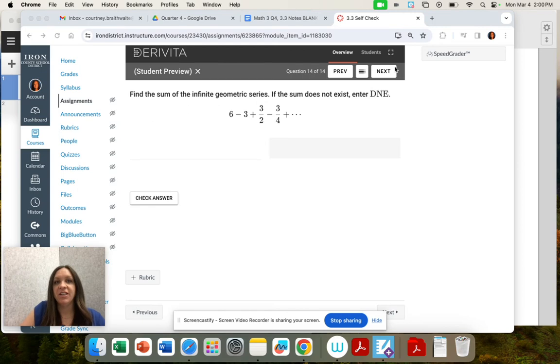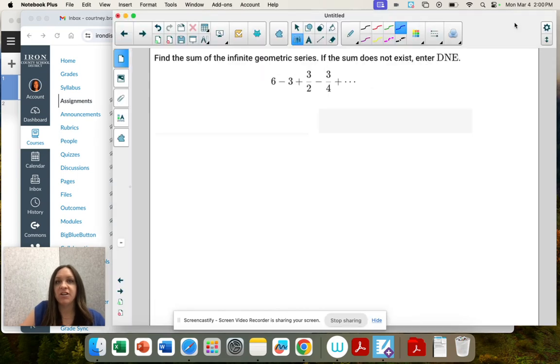Find the sum of the infinite geometric series. If the sum does not exist, enter DNE. The sum is the first term divided by 1 minus r. We're given our series, so our first term is 6.